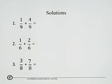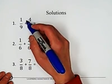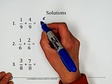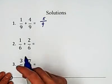Solutions. 1 over 9 plus 4 over 9. Numerator add together 5. Denominator keeps the same. Already simplified.